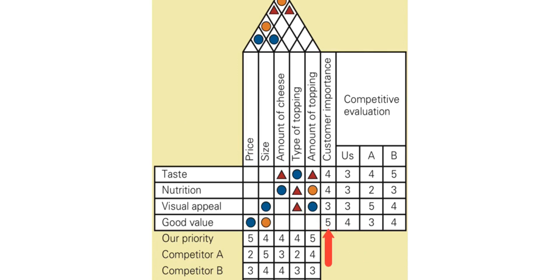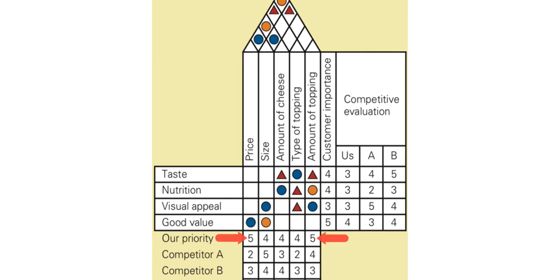On the right, customers rate good value as the highest level of importance. The company and a competitor rate the importance high, but not as high as the second competitor rates good value. At the bottom, the company determines that price and the amount of topping receive the highest development priority, higher than the other competitors.